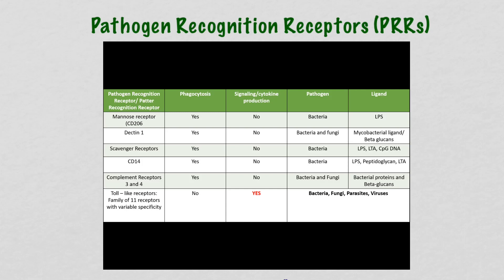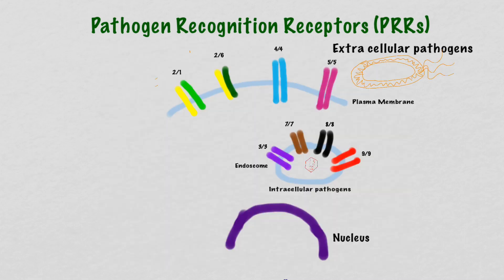Toll-like receptors are evolutionarily conserved all the way down to the fruit fly. There are 11 TLRs in the human body, but we only know the functions of TLRs 1 through 9, so you can forget about 10 and 11 for now. They are located both in the cellular membrane and in the endosomal membrane, thus protecting us from both extracellular pathogens like large motile bacteria and intracellular pathogens like viruses. TLRs exist in heterodimer or homodimer configurations — for example, TLR2 can form a heterodimer with TLR1 or TLR6, while all other TLRs form homodimers.